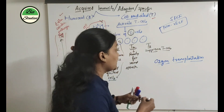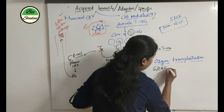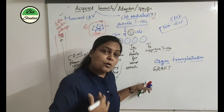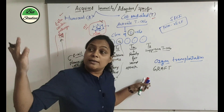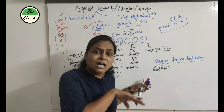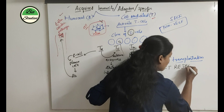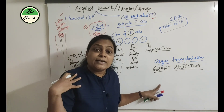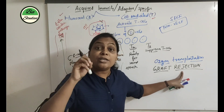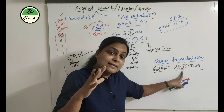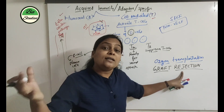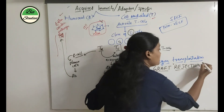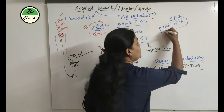When organ transplantation starts, the immune response leads to graft rejection. The body treats the transplanted organ as non-self-antigens, and therefore it starts graft rejection.